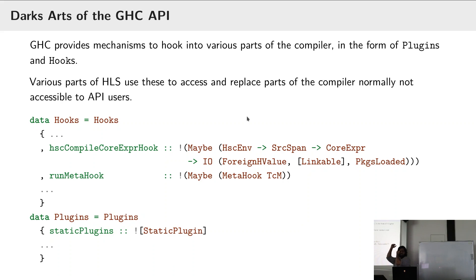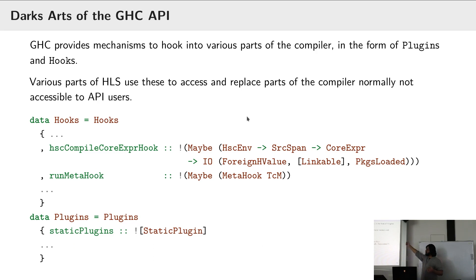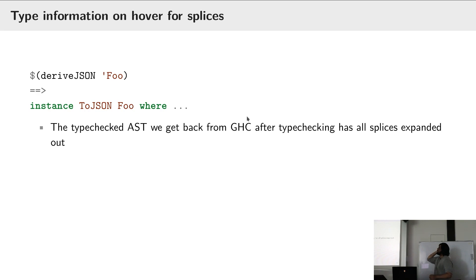The first one is type information for splices. When we get back a type-checked AST from GHC, we have all the splices expanded out. If you have 'deriving JSON Foo' in your source, in HLS we'll see the expanded instance. That's not great because you want to be able to hover over 'deriving JSON', go to definition on it, and know what the original thing the user wrote was. We have a runMetaHook in GHC which lets you intercept things in the AST before compilation to core.